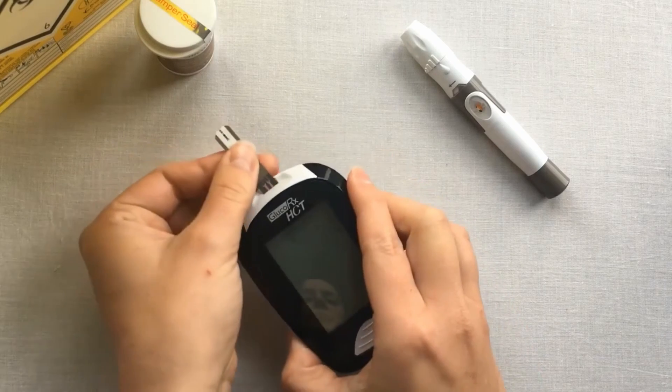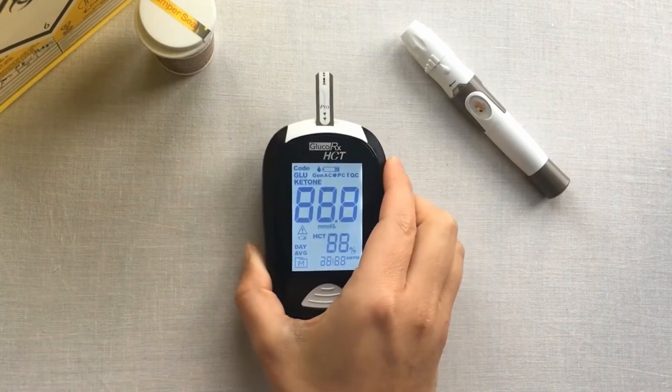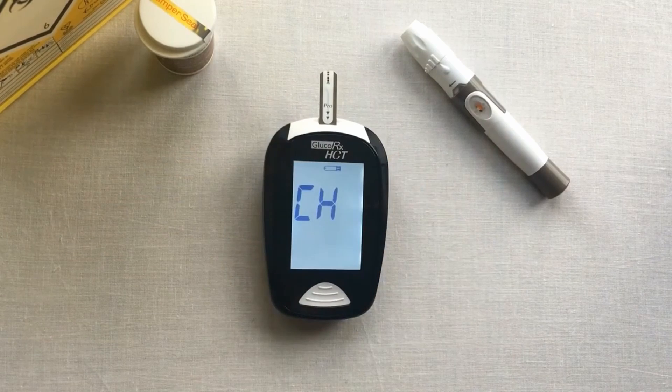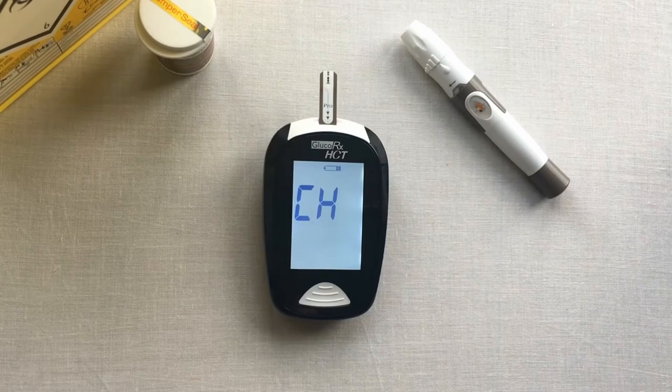With the meter turned off, insert your test strip into the top of the meter. The meter will automatically identify if you are using the blood glucose or ketone strip.